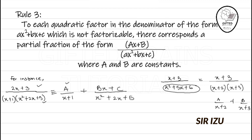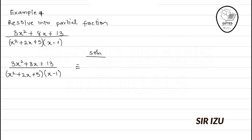Now let's take Example 4. The degree of the numerator is 2, while expanding the denominator gives degree 3, so we do not divide. The first factor x² + 2x + 5 is not factorizable, so we write Ax + B all over x² + 2x + 5. Then plus C over x minus 1 for the linear factor.